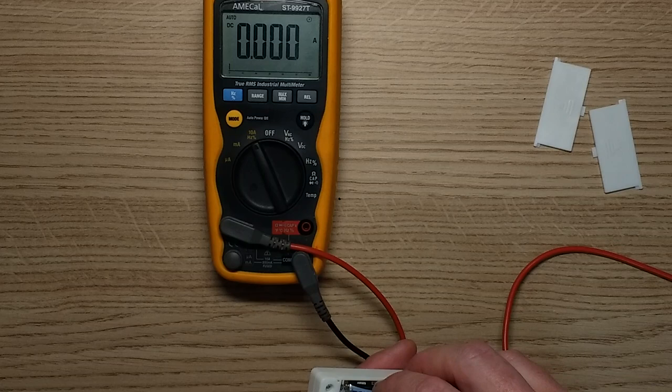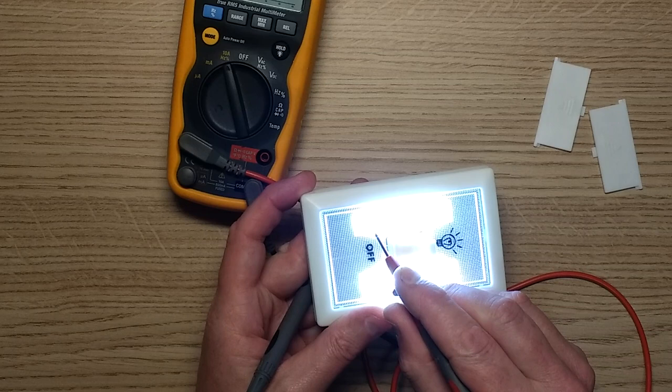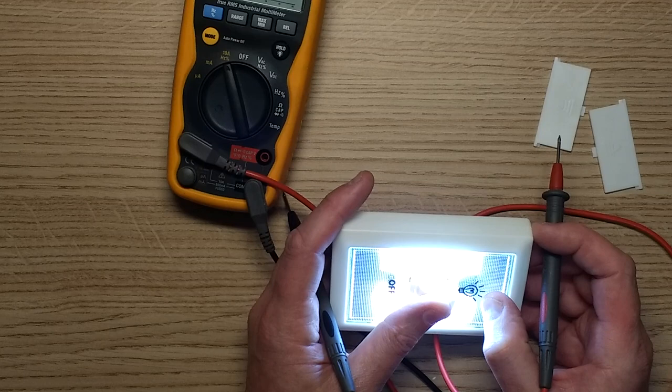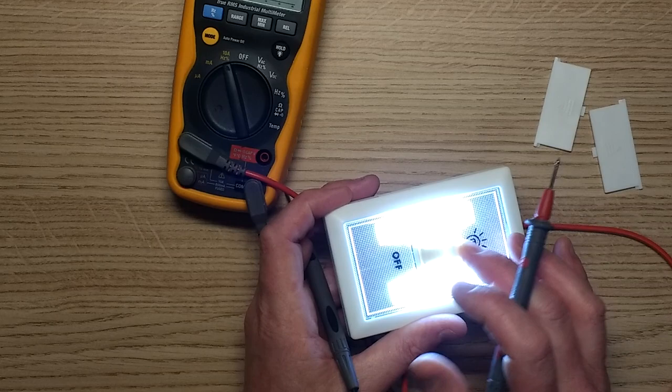So roughly 150 milliamps per COB array. I'm guessing there's 1, 2, 3, 4, 5, 6, 7, 8, 9, 10, 11, 12, 13, 14, 15, about 16 COB chips on either side. So that current is going to be 10 milliamps per COB chip. That sounds reasonable enough.